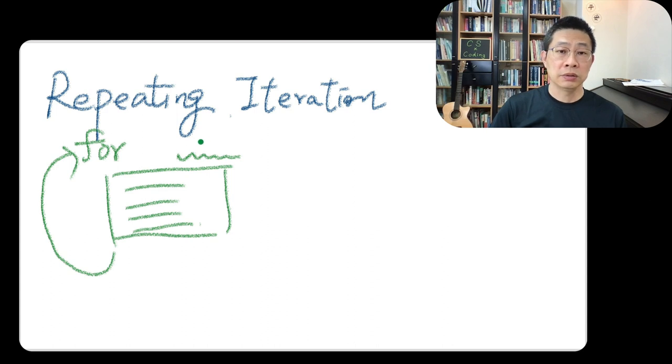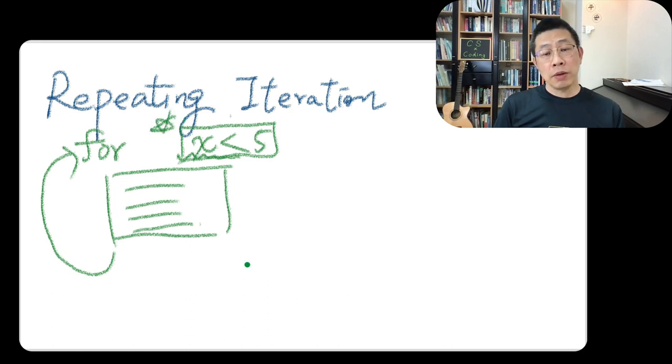Maybe a boolean comparison if x less than 5. You'll do this again and again and again. So this kind of part is quite crucial. Without it, how do you make sure the repeating will end? So that is the one part.